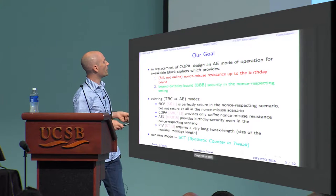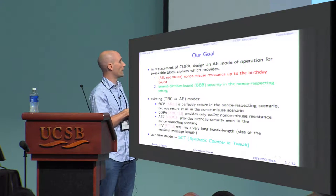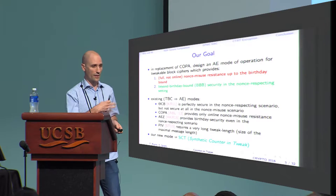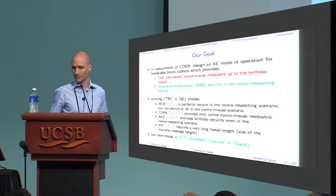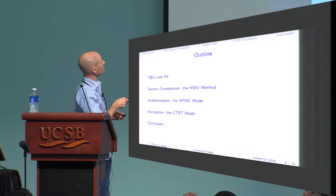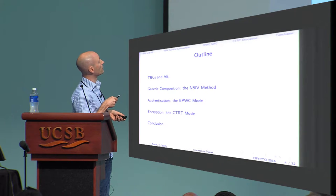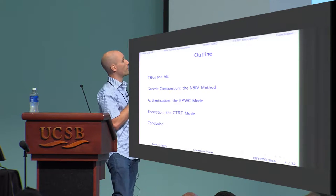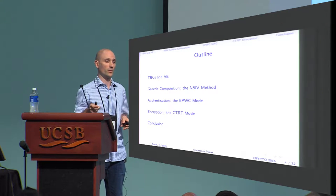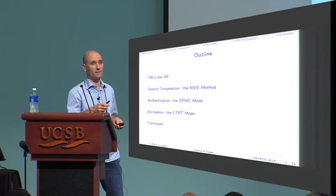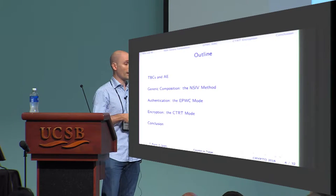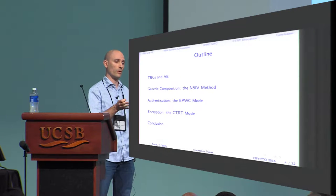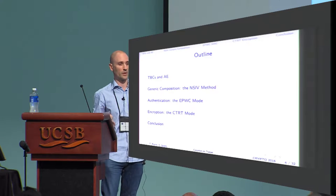What we came up with is a new mode called SCT — Synthetic Counter and Tweak. The outline will be as follows: we use generic composition. I will introduce the new generic composition method we use, called NSIV, which is very close to SIV, and then describe the two parts of the mode — the authentication part and the encryption part.